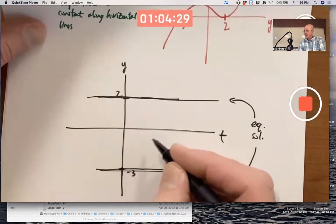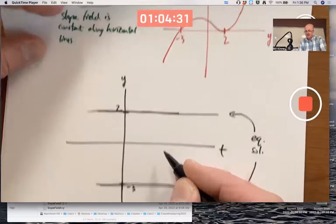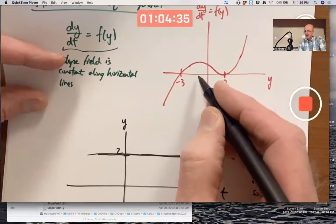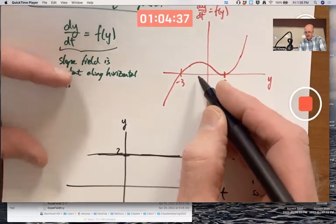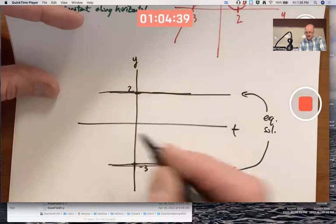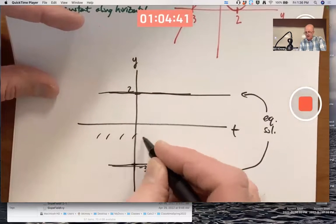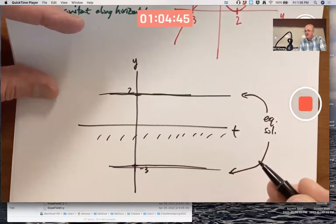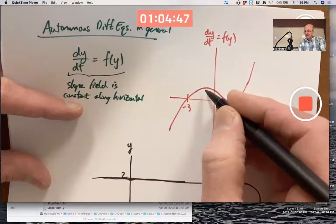In other words, the slope field has to have positive slopes in here. And in fact, it's going to be highest positive slopes when y is close to, say, negative 1, like right about there. When y is close to negative 1, that's where your slope marks are going to have the highest possible positive slope because that's where the output of this function is highest in this region.